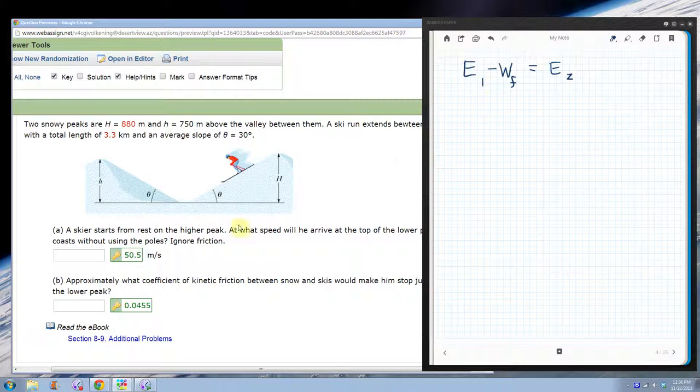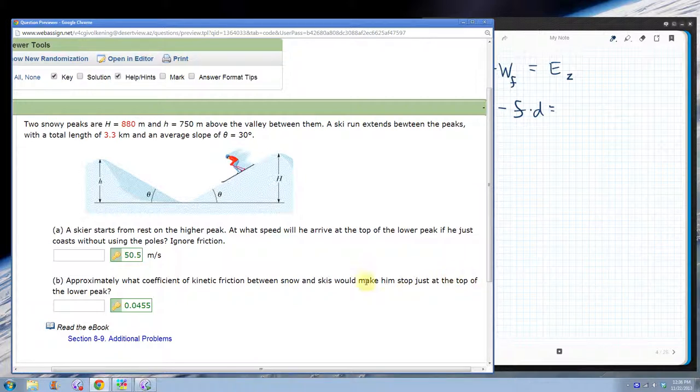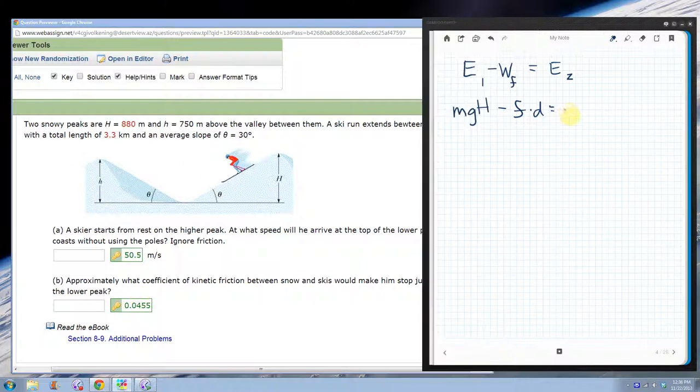So, the energy at the top of the first peak, again, he started from rest, so no kinetic energy, but had potential energy at the top, so that would be Mg capital H minus, well, the work done by friction is the force of friction times the distance that he went, which they give us. They give us it's 3.3 kilometers. Equals, well, the energy at the top of the second one, it says we're going to make him stop right at the top, so the kinetic energy would be zero there. That means all of the energy at the top of the second peak is simply the potential energy at the top of the second peak. So, that's Mg little h.